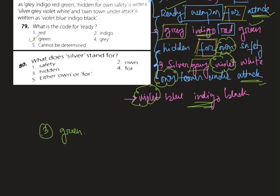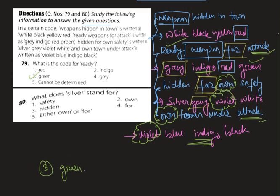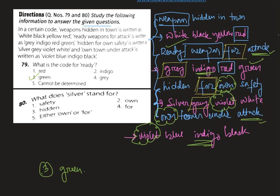Now we need to find what 'silver' stands for. If we compare the first statement and the third statement where we find the code word silver, we get that 'hidden' is the common word between these two statements. Comparing the code words, we find that 'white' is the common code word and it stands for 'hidden.' Therefore, it is obvious that 'silver' is the code for 'safety.'